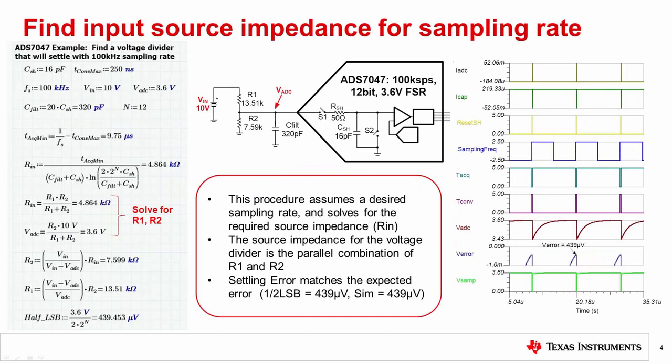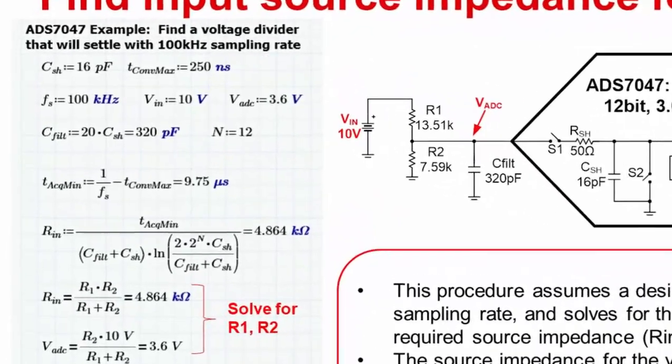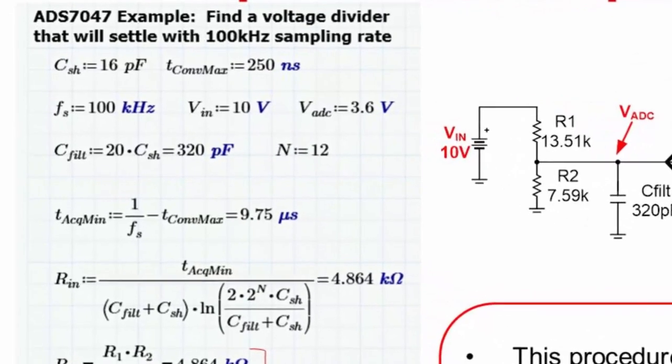Some designs may have a specific sampling rate requirement but have flexibility on the source impedance selection. A typical example of this would be monitoring the supply using a voltage divider. In the case of the voltage divider, the main factor in selecting the divider impedance is often power dissipation. Choosing a lower impedance divider will increase power dissipation but will also allow for a faster sampling rate. The equations here are rearranged to solve for the maximum input resistance to achieve a particular sampling rate.